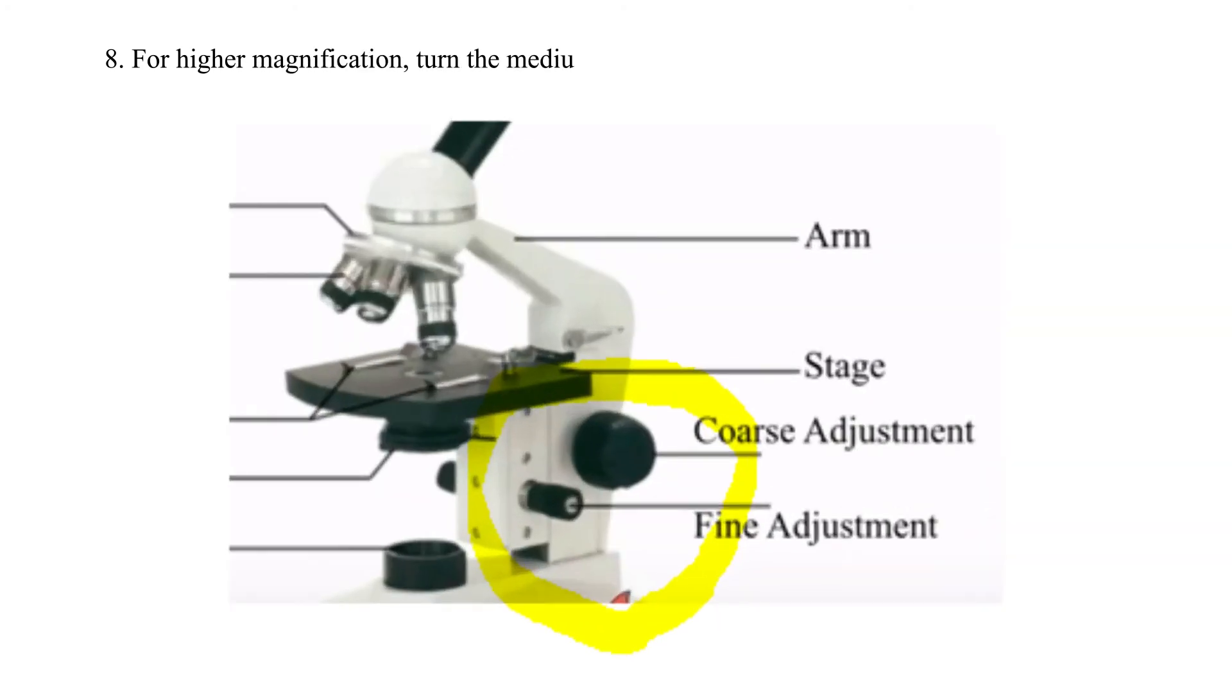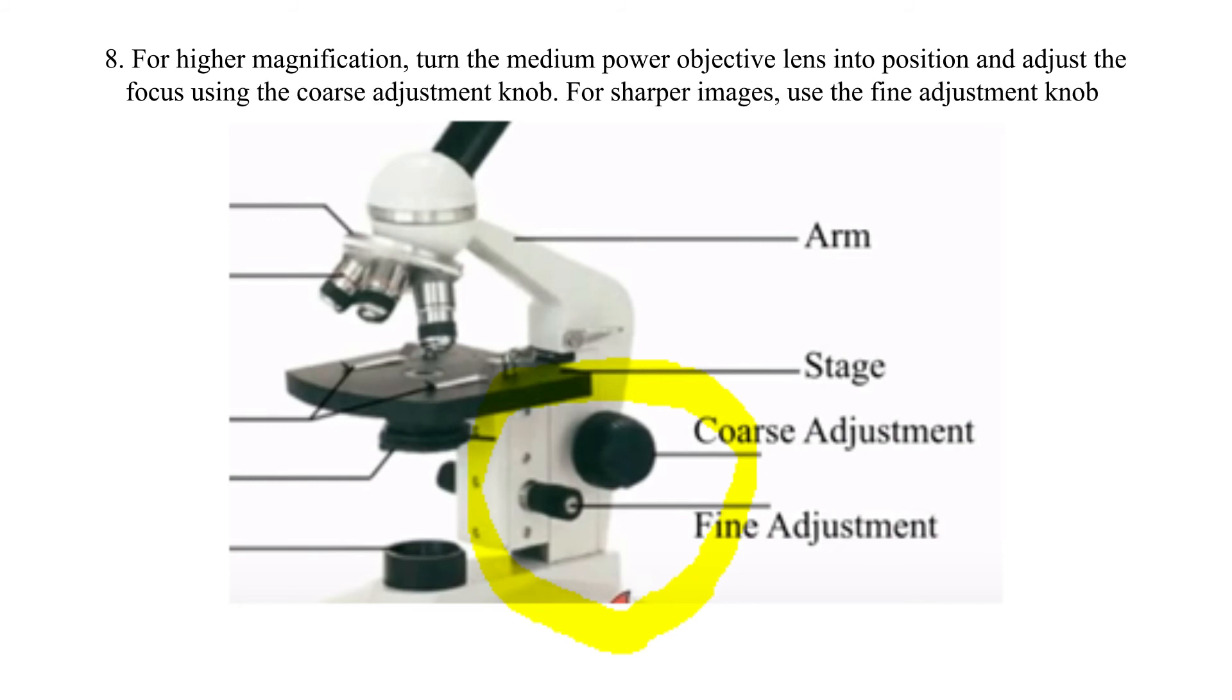8. For higher magnification, turn the medium power objective lens into position and adjust the focus using the coarse adjustment knob. For sharper images, use the fine adjustment knob.